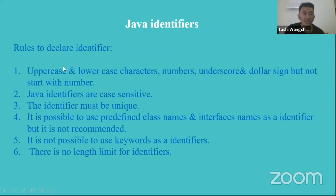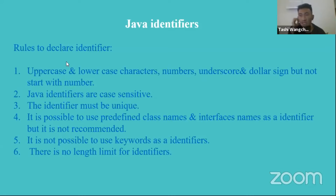The rules for declaring identifiers are: it can have uppercase or lowercase characters, numbers, underscore, and dollar sign, but it should not start with a number. I will show you examples for this.